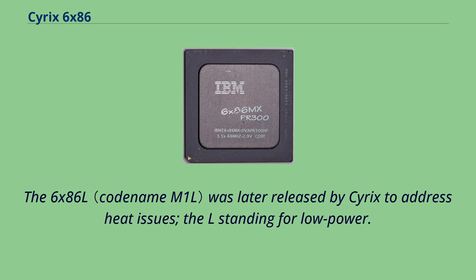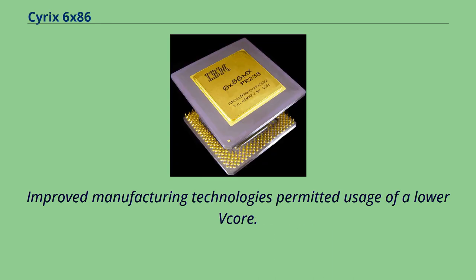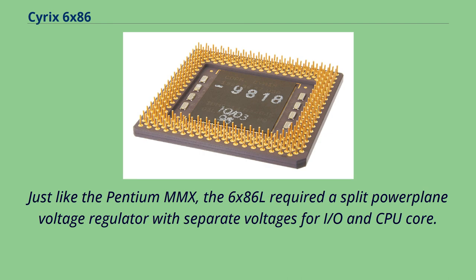The 6x86L was later released by Cyrix to address heat issues, with the 'L' standing for low power. Improved manufacturing technologies permitted the use of a lower V-core voltage. Just like the Pentium MMX, the 6x86L required a split power-plane voltage regulator with separate voltages for I/O and the CPU core.